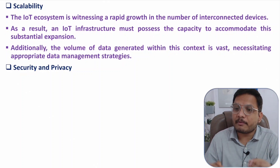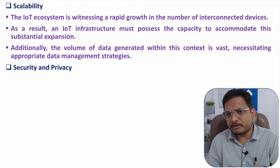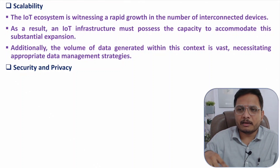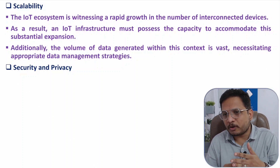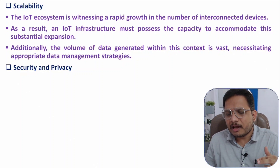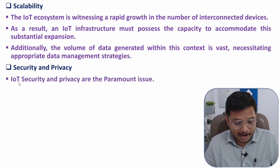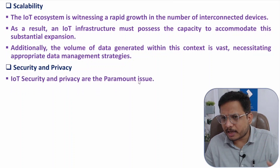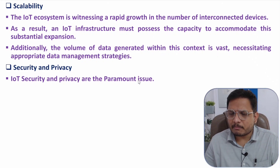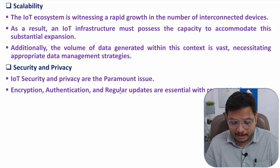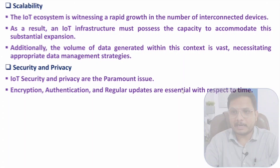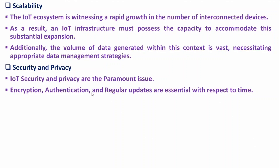Security and privacy are major concerns in IoT, as all devices are on the internet. If privacy and security are not maintained, the system cannot be trusted by humans. With respect to time, updates and security protocols are improving, and systems are becoming smarter in terms of security. Encryption, authentication, and regular updates are essential, as without authentication and encryption the system is not up to the mark when everything is available on the internet.